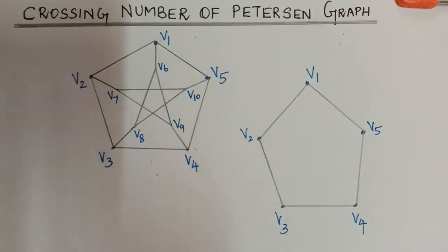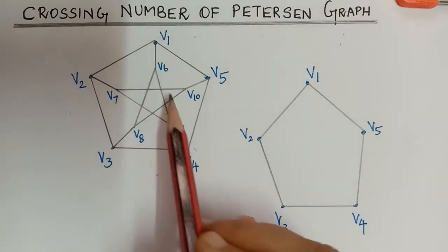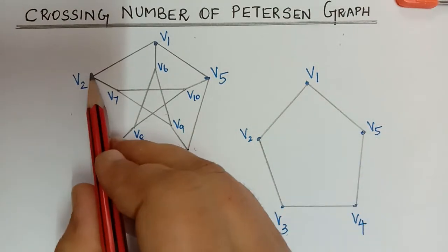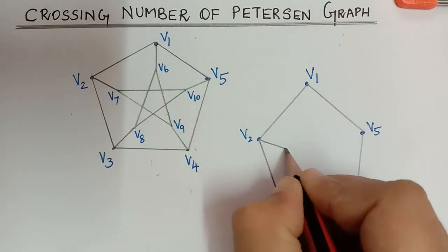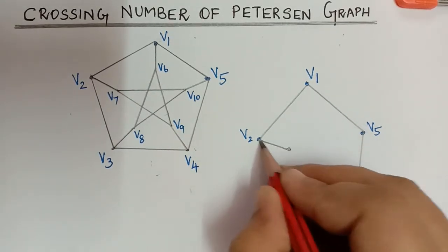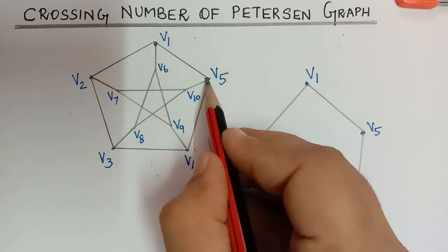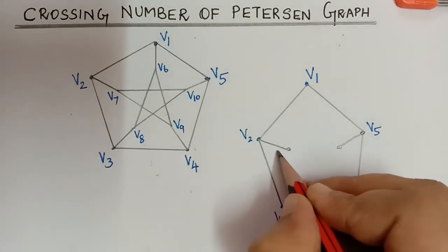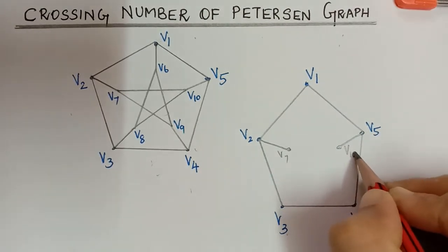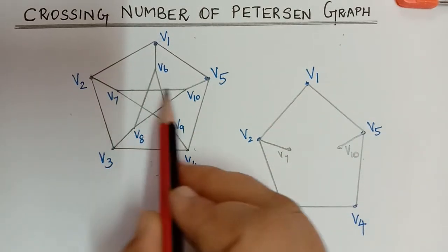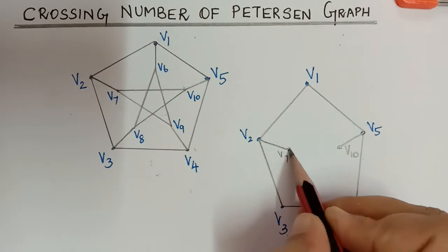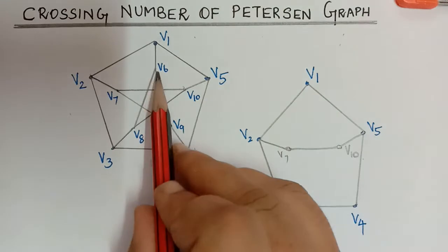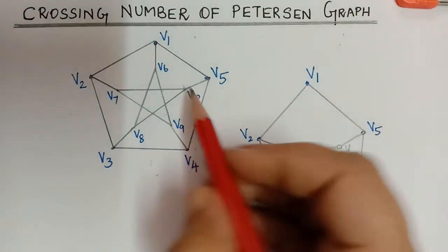Now we can see there is an edge between v2 and v7, so we draw that first: v2 to v7. There is also an edge between v5 and v10, which we draw next. This is v7 and this is v10. Now we can also see there is an edge between v7 and v10, so we draw that edge. So far there is no crossing.